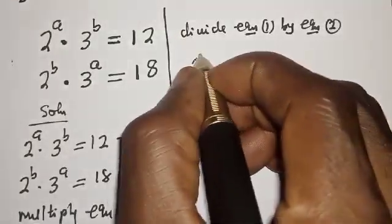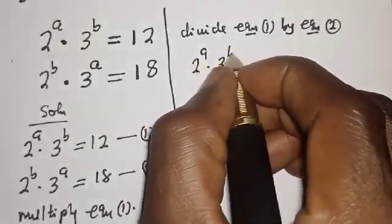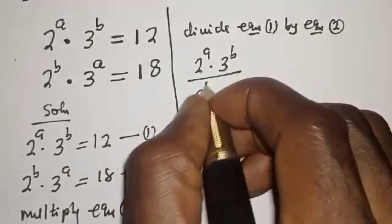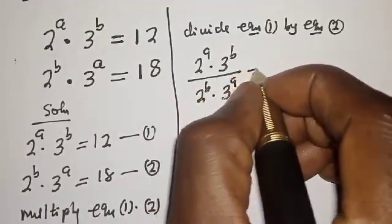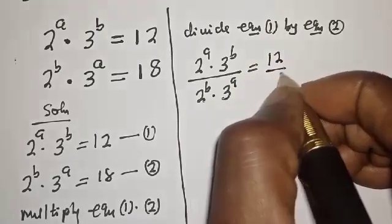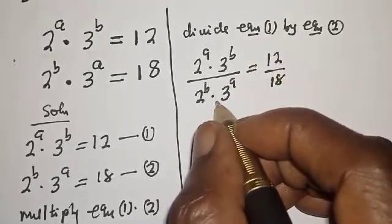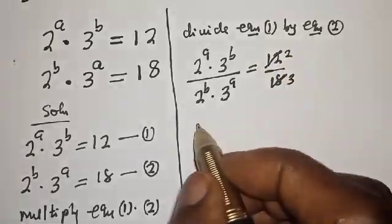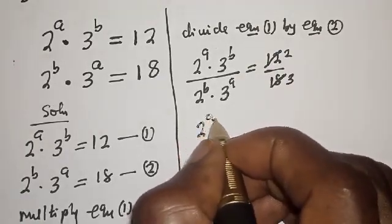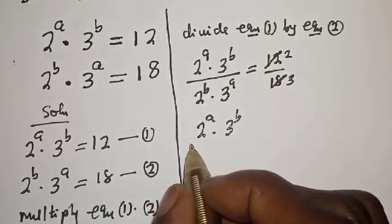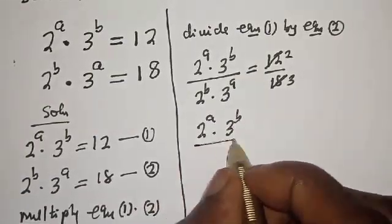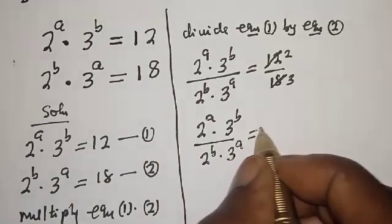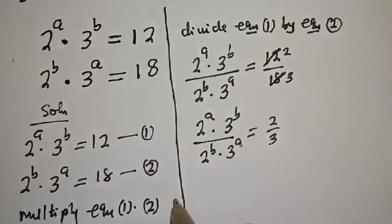Now let's divide equation 1 by equation 2. Equation 1 is 2 raised to power a, multiplied by 3 raised to power b, divided by 2 raised to power b, multiplied by 3 raised to power a, equals 12 over 18, which simplifies to 2 over 3.